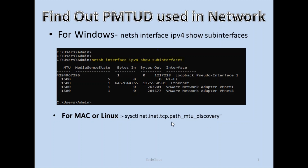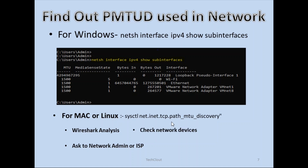On Linux or Mac, you can use the command: sysctl net.inet.tcp.path_mtu_discovery. That command will give you a similar output that lets you know about the MTU in use. To find out the MTU better, we can use Wireshark analysis to analyze the logs, then ask the network admin or ISP to find out the maximum transmission unit, or we can also check in network devices like routers, switches, firewalls, or any other network devices.